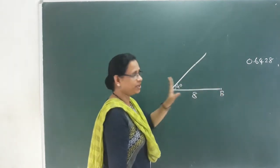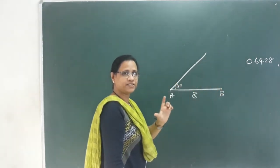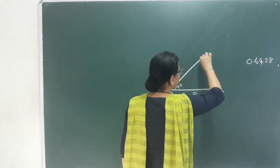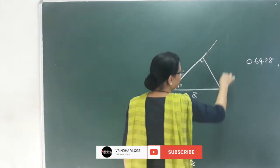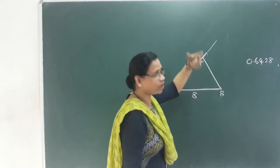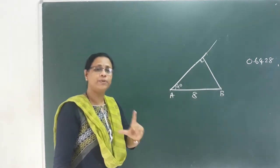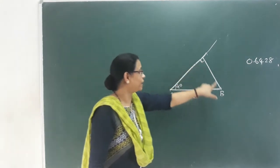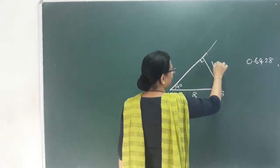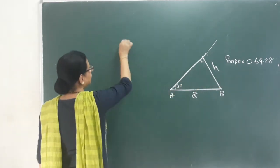To complete the triangle, the third side's shortest distance is the perpendicular. The shortest distance is the perpendicular distance — we call it the height H. So H equals sine 40.